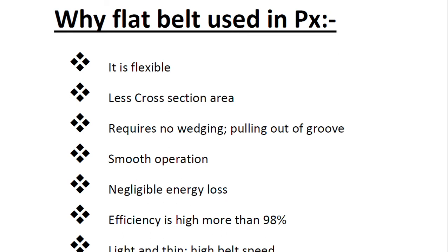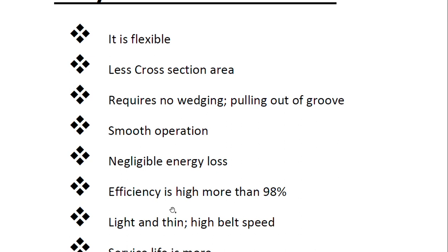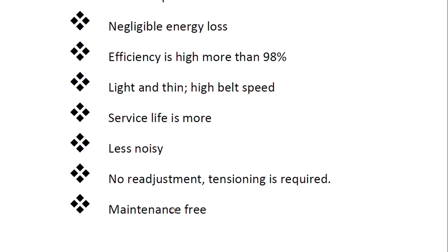There is negligible energy loss with a flat belt — efficiency is high, more than 98%. It is light and thin, because of which it supports very high speed. The purifier has a very high speed of rotation, so this is an important point. Service life is more because of less maintenance and higher efficiency. The flat belt is also less noisy, as there is no wedge and less cross-section area, so the noise produced is very low.